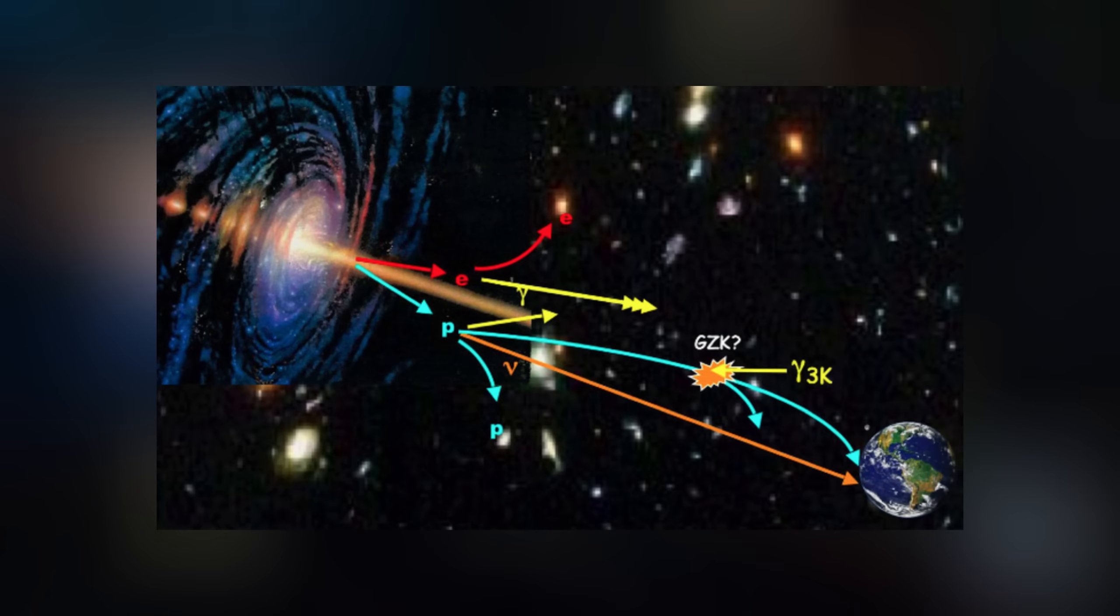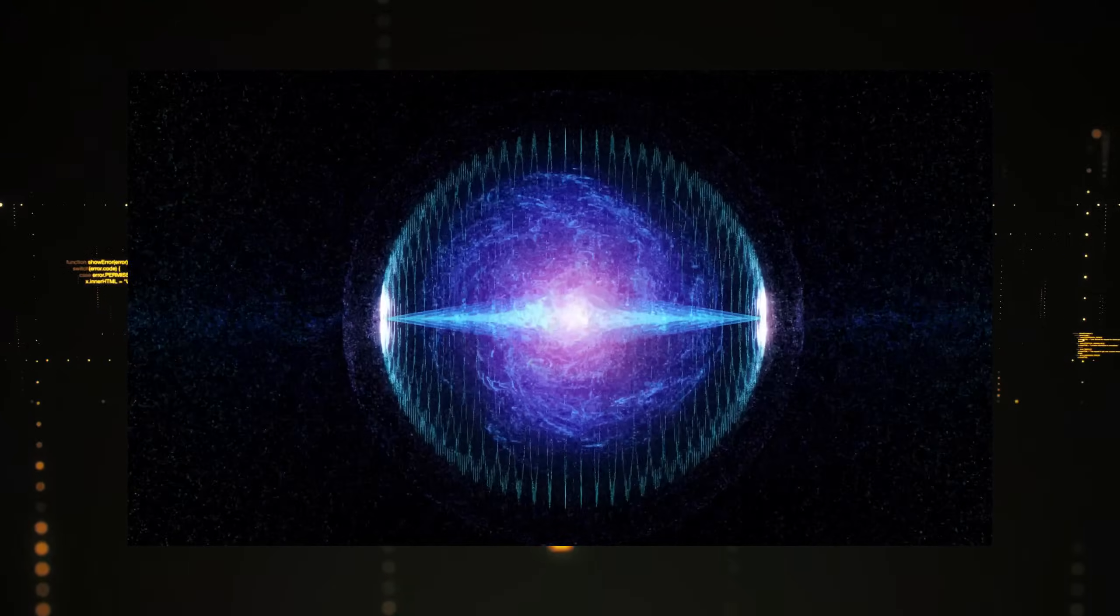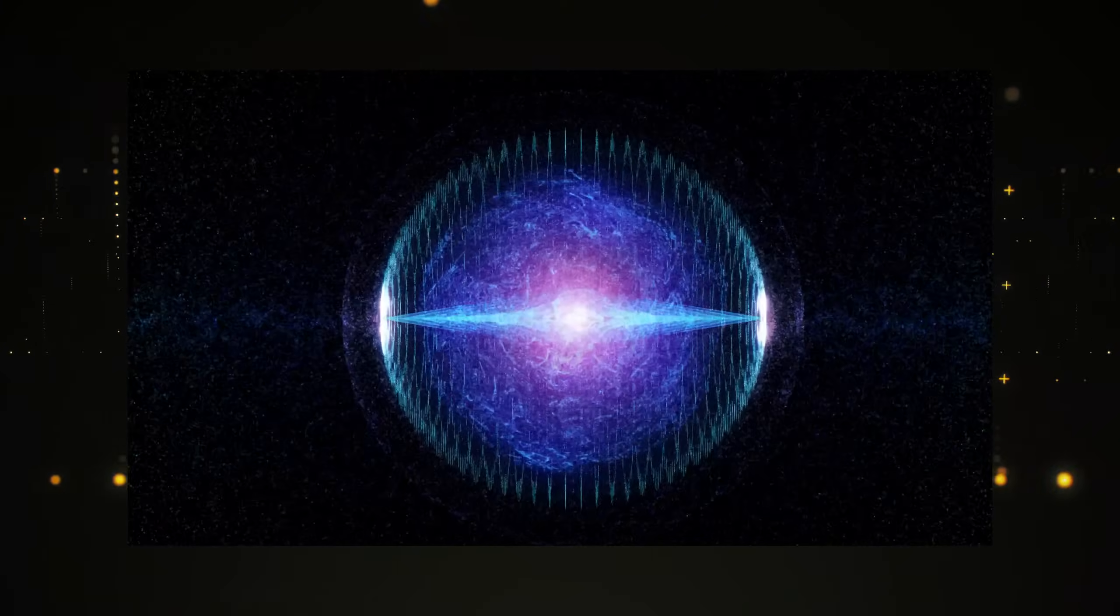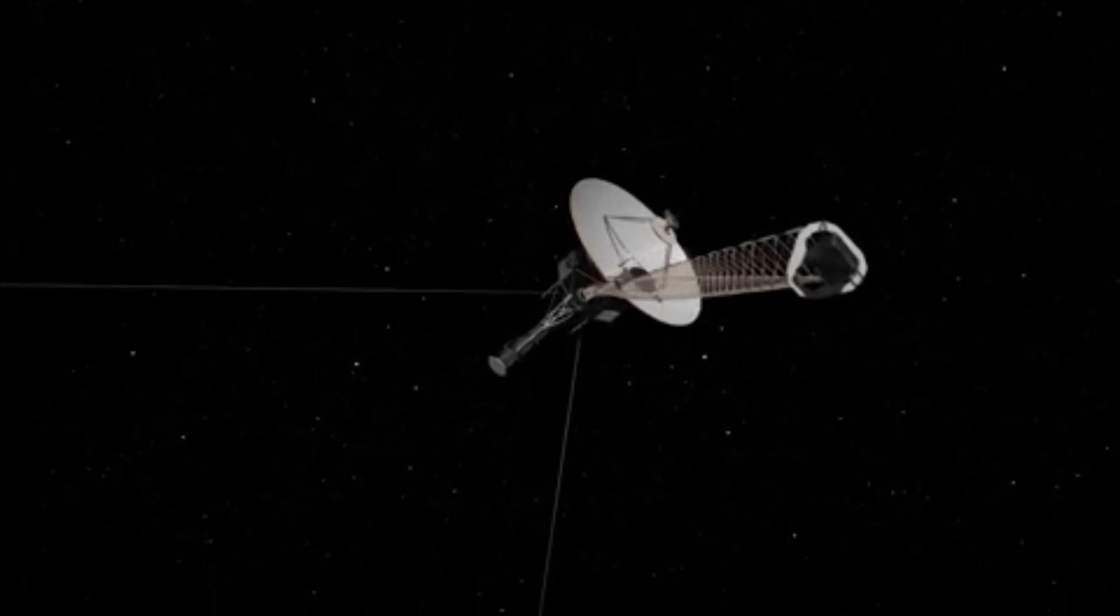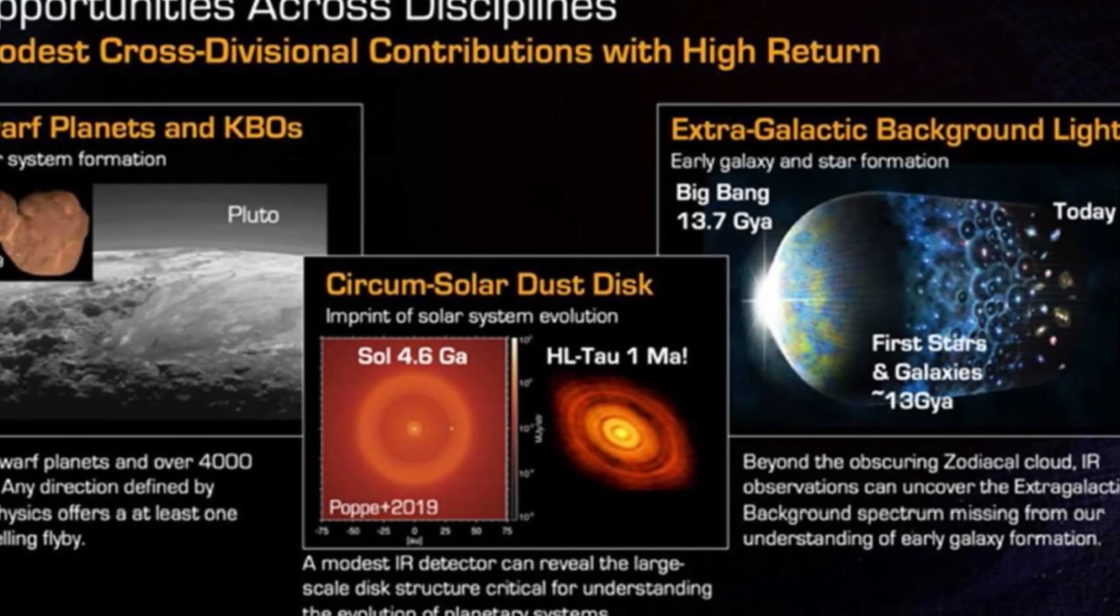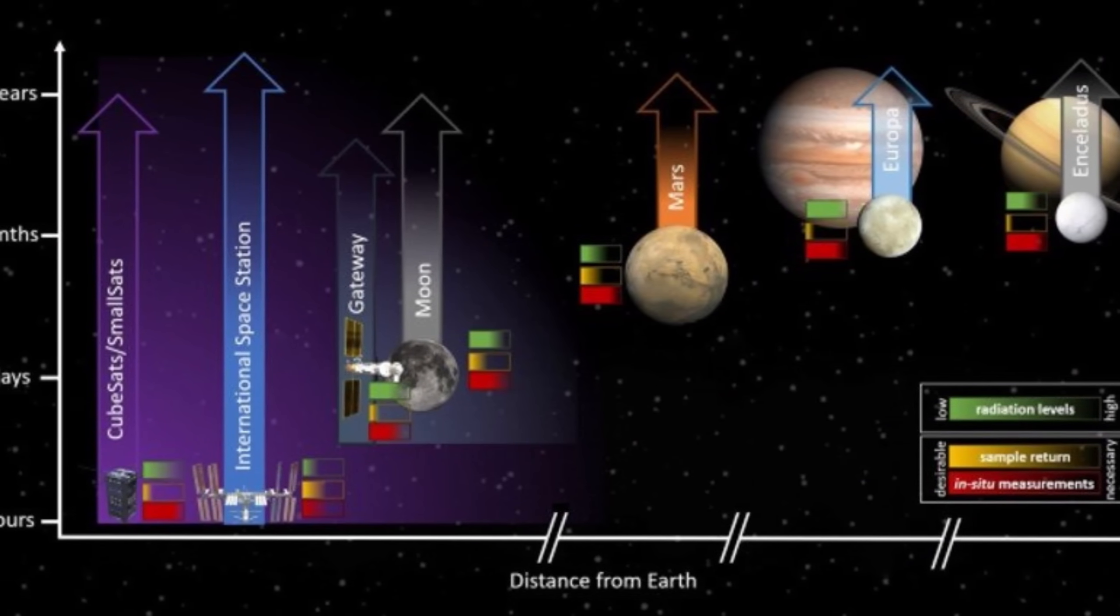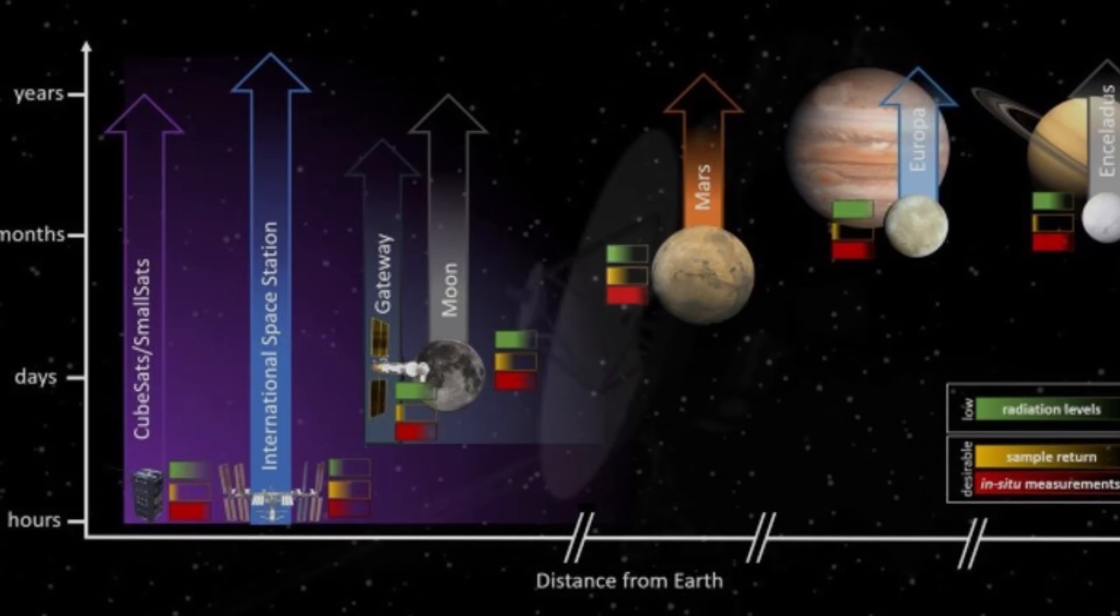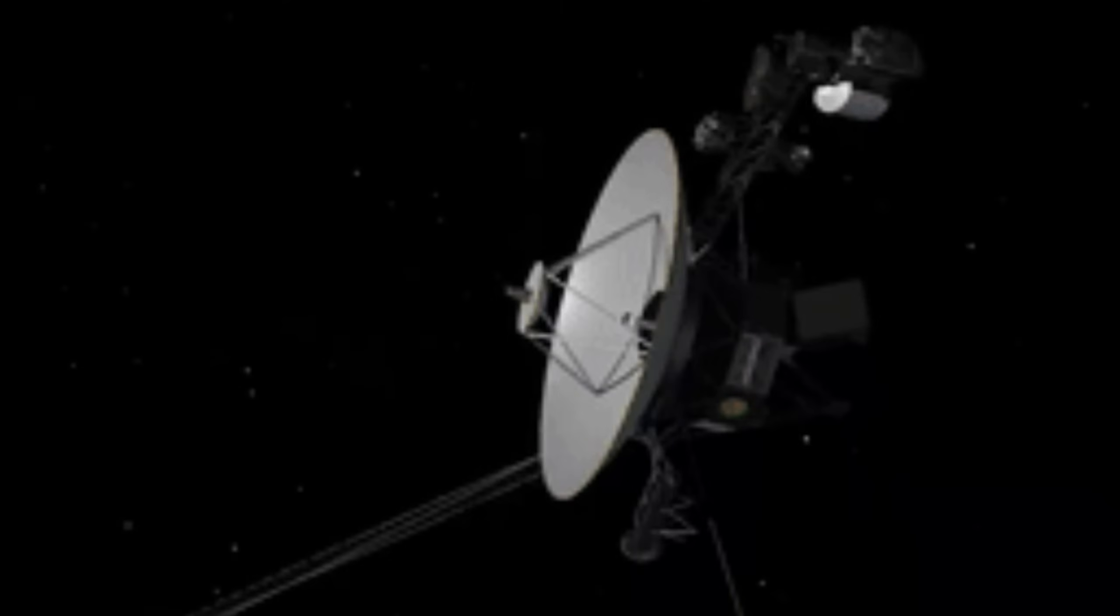Voyager, JWST, and Hubble each have distinct roles in advancing our understanding of the universe, yet they all contribute to the broader goal of exploring space. Voyager is an interstellar probe that is moving outward, gathering data on the solar system's boundaries and the interstellar medium. In contrast, Hubble orbits Earth, while JWST orbits the Sun at the L2 Lagrange point, with both focusing on deep space observations through high-resolution imaging. Hubble and JWST are advanced telescopes designed to examine distant galaxies, nebulae, and exoplanets in intricate detail. JWST specializes in infrared observations, allowing it to study the early universe, while Hubble captures images in visible and ultraviolet light. Voyager, on the other hand, has a more exploratory and localized mission, focusing on measuring the interstellar environment rather than detailed imaging.